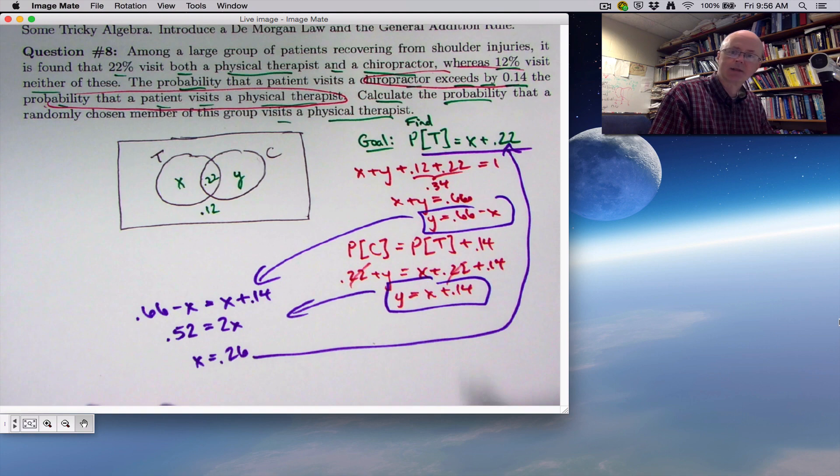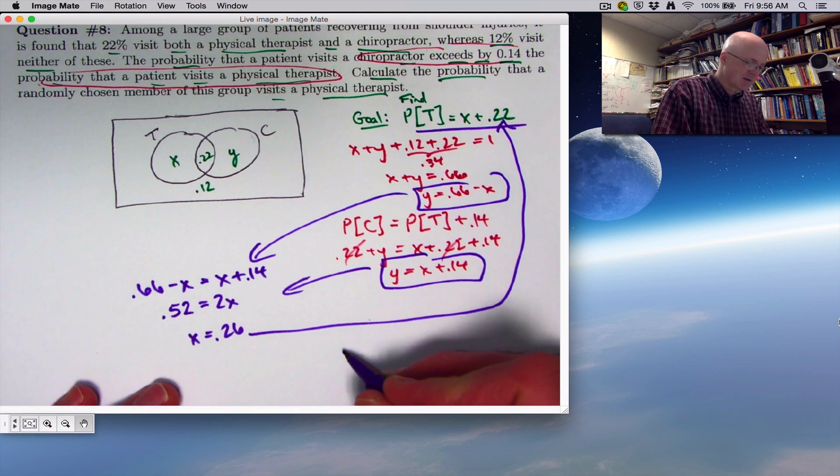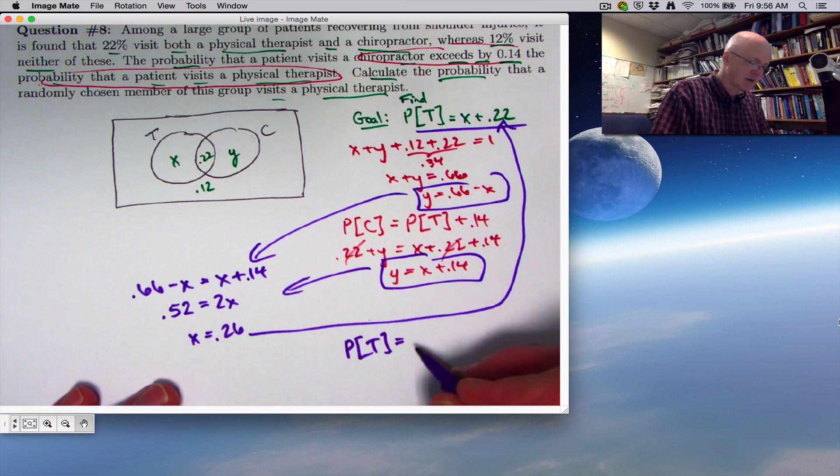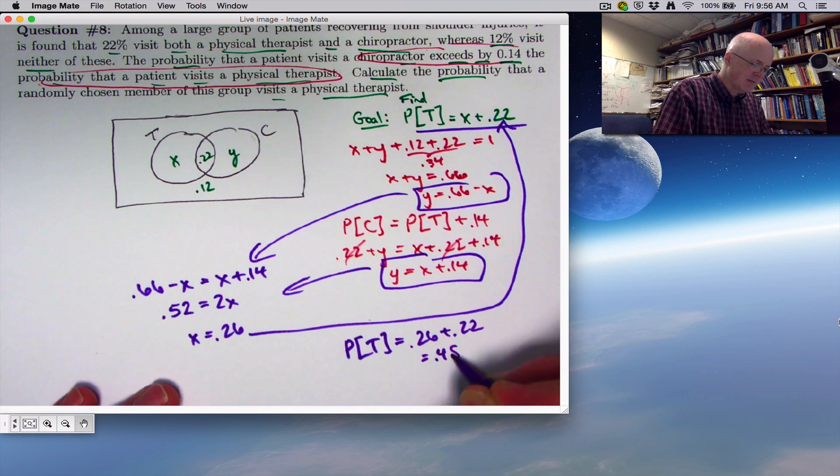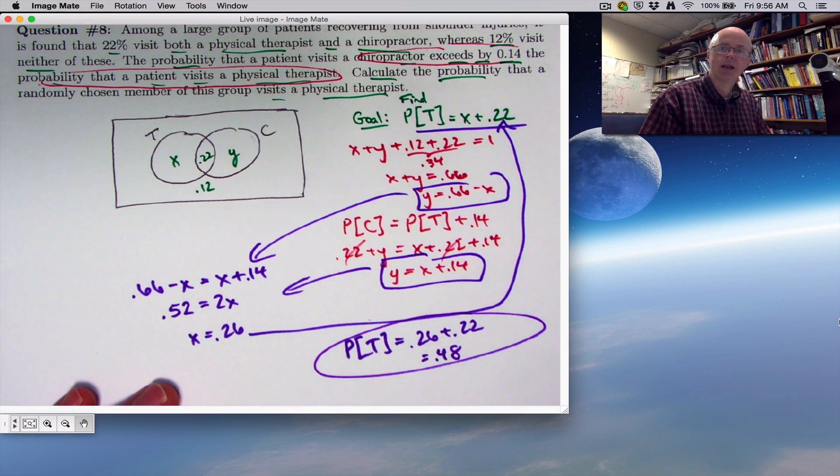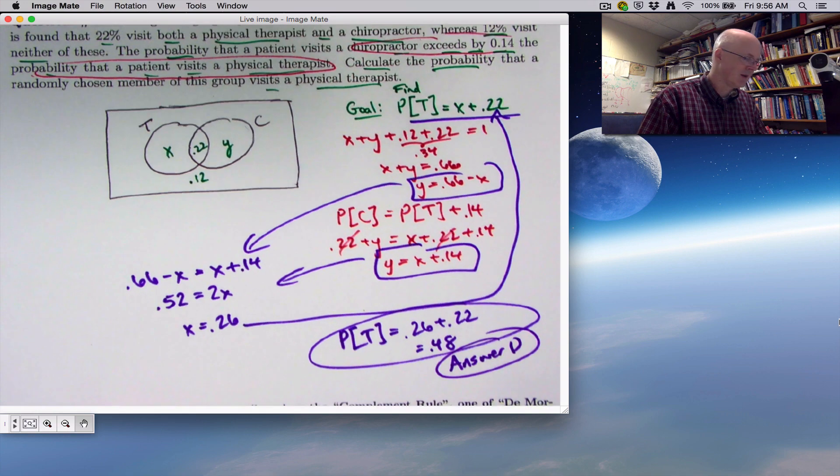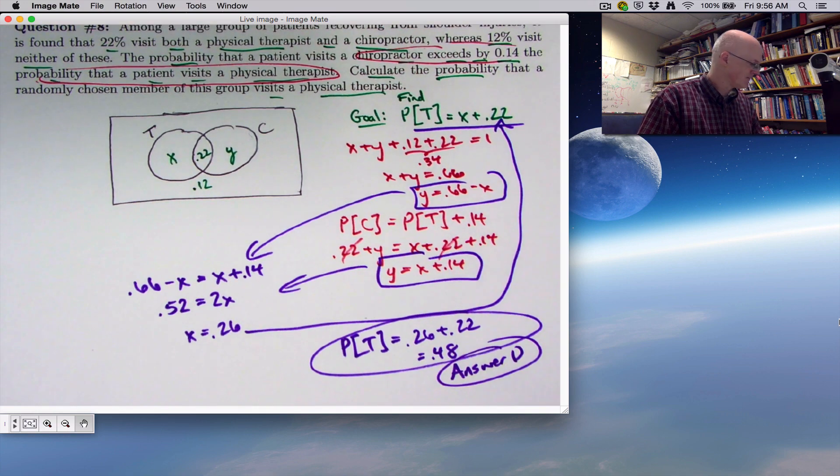The answer to the question would be X plus 0.22. So the probability of visiting a physical therapist is 0.26 plus 0.22, which is 0.48. That is the answer to the question, and looking in the list of possibilities, that ends up being answer D. That's the quick way to solve this, with some slightly tricky algebra.